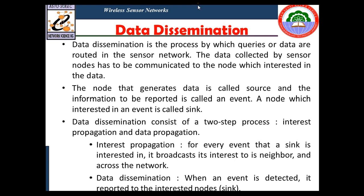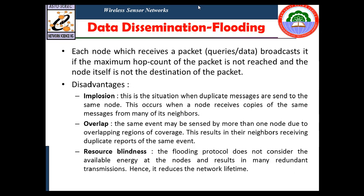In data dissemination, the node that generates data is called the source, the information to be reported is called an event, and the node interested in that event is called the sink. When data is transmitted by multiple sensor nodes, it must be communicated to the node interested in that data. Data dissemination involves two major steps: interest propagation, where the sink broadcasts its interest to its neighbors and across the network, and data dissemination, where when an event is detected it is reported to the interested node.